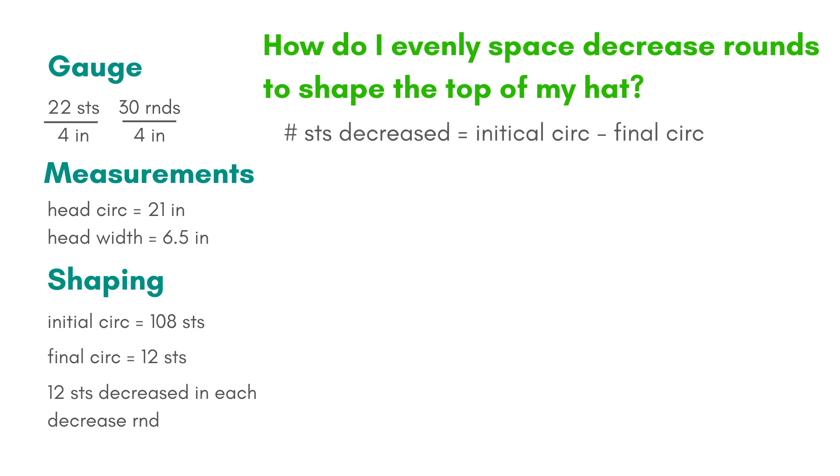To determine the spacing of the decrease rounds, we need to know how many stitches will be decreased. That's just the initial circumference minus the final circumference. For my hat, I start with 108 stitches and end with 12 stitches. When I subtract it out, I know I'll be decreasing 96 stitches.